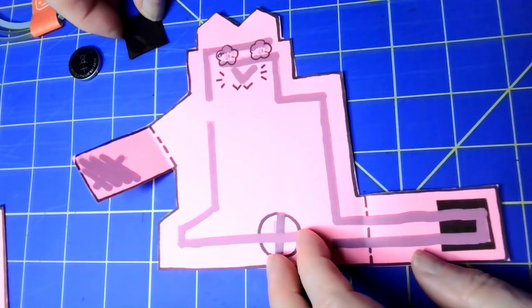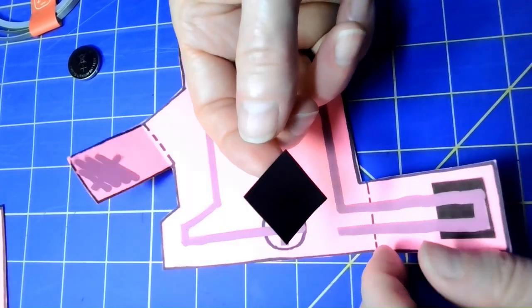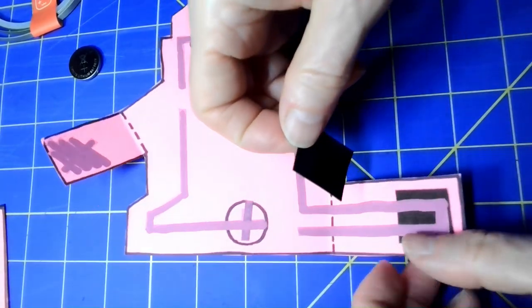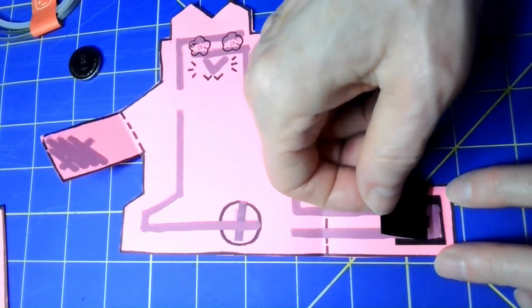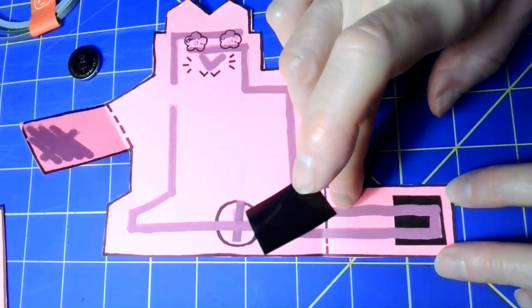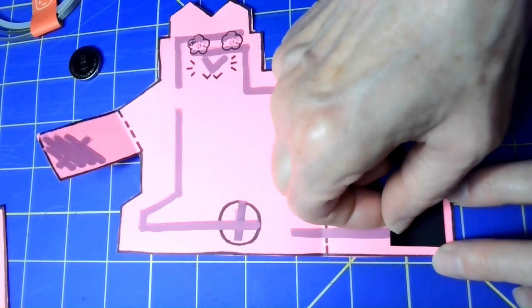Next thing you're going to do is take your magnetic sheet and stick it right here on the tail where it shows. You'll see that this circuit we're going to make goes in a U. We're going to do that right over the magnet.